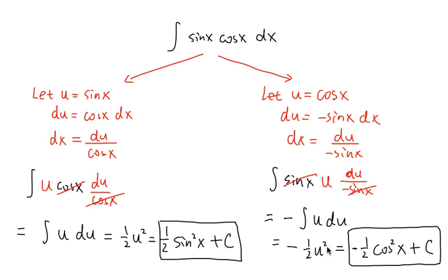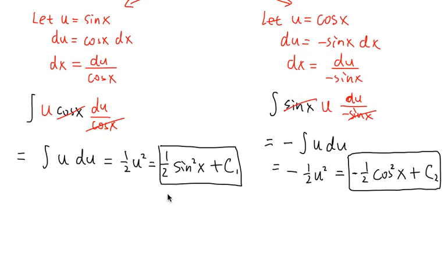So this is why. From the first approach, you get this 1 half sine square x plus c1. And from the second approach, you will get negative 1 half cosine square x plus c2. And I'm going to claim that they are off by just a constant. And what that means is they are technically the same, same kind of function, but then they are just off by a number.